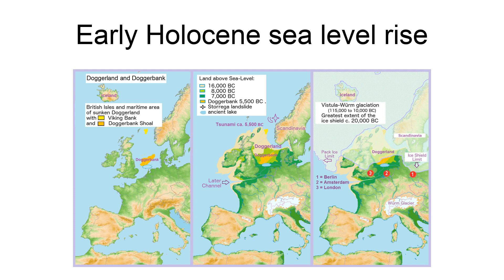Meltwater pulse 1c, between ca. 8.2 to 7.6 ka, centered at 8.0 ka, was a rise of 6.5 m in less than 140 years. Such rapid rates of sea level rise during meltwater events clearly implicate major ice loss events related to ice sheet collapse. The primary source may have been meltwater from the Antarctic ice sheet, though other studies suggest a northern hemisphere source from the Laurentide sheet.